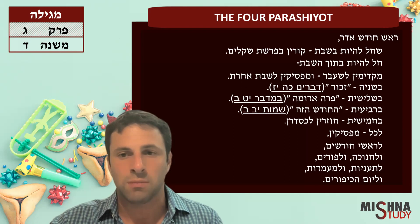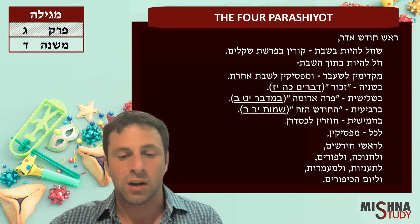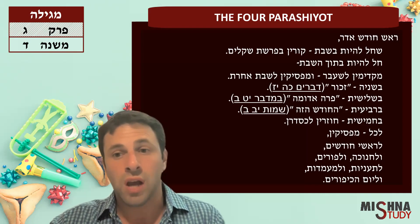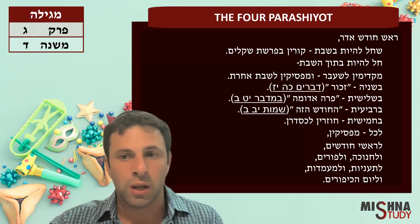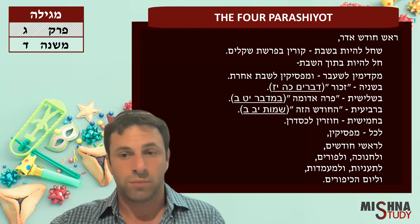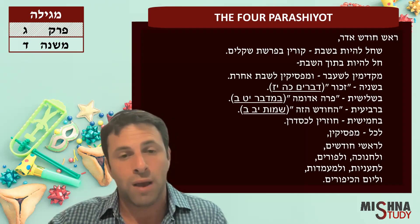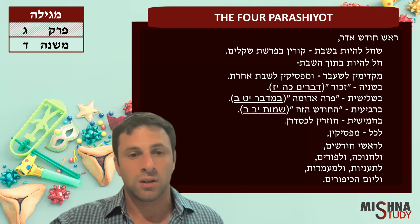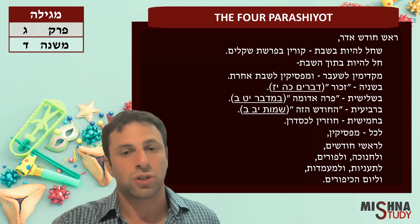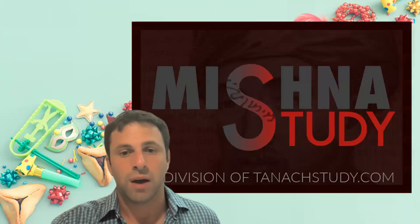The Mishnah continues: all of these occasions — Rosh Chodesh, Hanukkah, Purim, fast days, Ma'amadot, and Yom Kippur — we always stop the normal Haftarah schedule and read a unique Haftarah. These occasions will have a unique Haftarah rather than the normal one corresponding to the Parashat HaShavuah, because the Haftarah corresponds instead to the festival of that week.